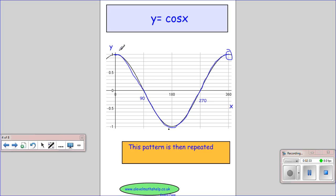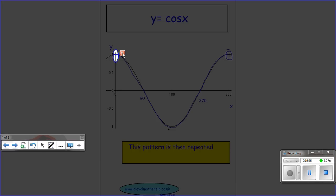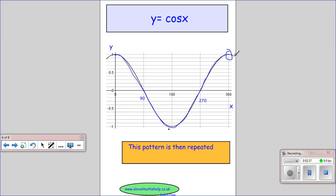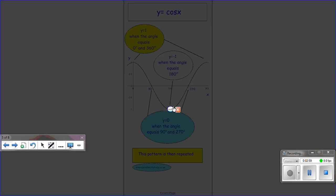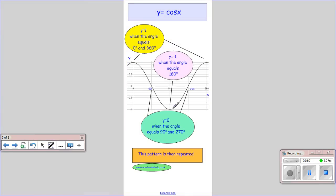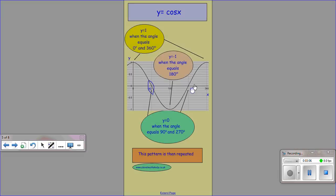Can you see we're back at this one where we started at this one over here? It would then carry on, it would carry on down and it would carry on down going through 0 to a minimum, back up through 0 to the maximum and so on. So this is just a summary page. So we've got y equals the maximum 1 when x equals 0 and 360, y equals the minimum down here of minus 1 when x equals 180 and it goes through 0 at 90 and 270.